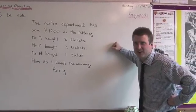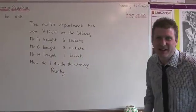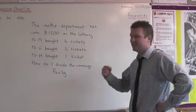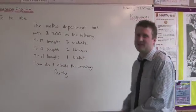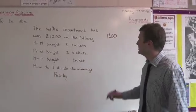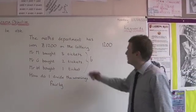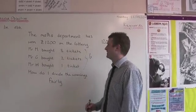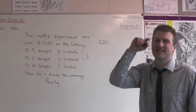We've won some money on the lottery — £1,200. But how are we going to split it up? Mr Middleton has bought three tickets, Mr Gill's bought two tickets, and unluckily I only bought one. So we've got £1,200 and we need to split it up into six parts. How did you get six parts? Mr Middleton's got three parts, Mr Gill's got two parts, and I've only got one part. So you add them all up.